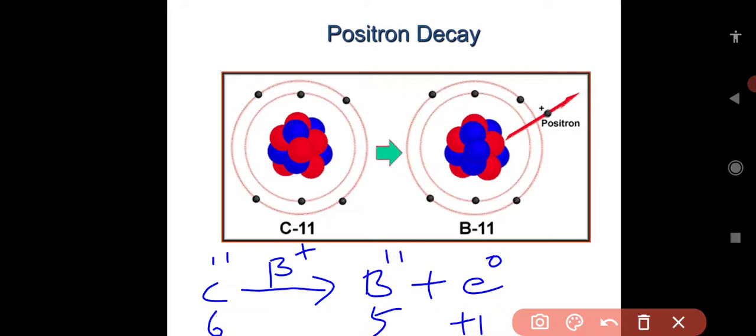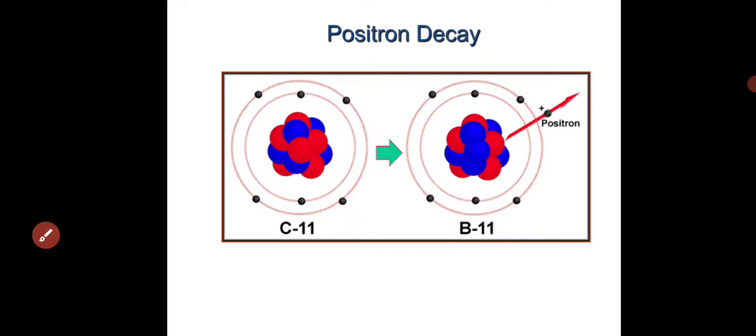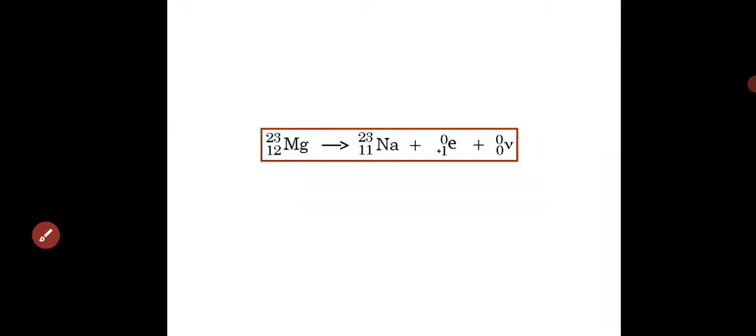This is another example. Magnesium-23 undergoes decay which gives sodium-23 with the emission of positron.